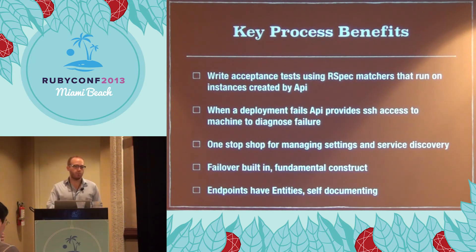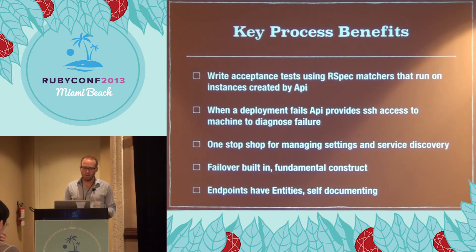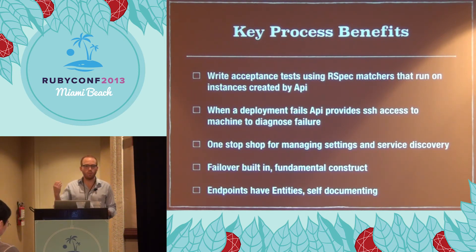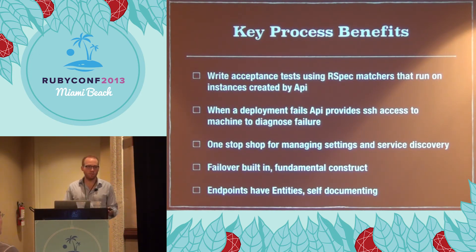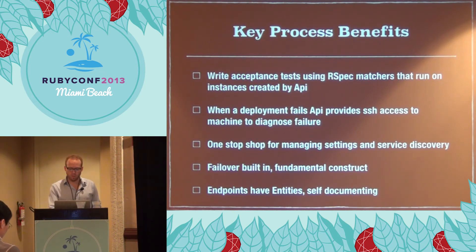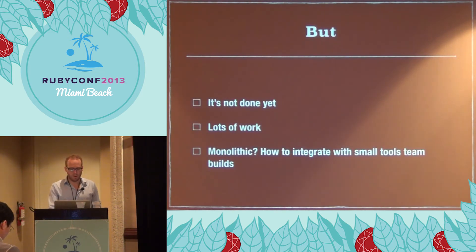It is self-documenting, which is pretty cool. Using Grape, you write a couple of descriptions of your endpoints — your GETs and POSTs. I made an endpoint to represent the endpoints, with an entity for the endpoint, so the actual API endpoints can be output as JSON representations. You can ask for documentation in JSON. It's not done yet — lots of work.